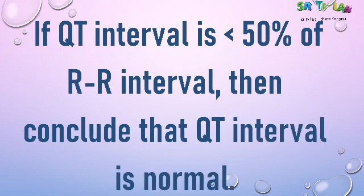If QT interval is higher than 50% of the RR interval, then it is abnormal. When it is inferior to 50% of the RR interval, QT interval is normal. Thank you for watching the video.